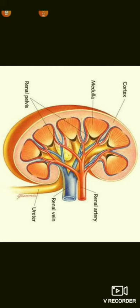The kidneys of humans are reddish-brown, bean-shaped, slightly flattened organs. A pair of kidneys is present just below the stomach, one on either side of the vertebral column. They are asymmetrical in position — the right kidney is about one to one-and-a-half centimeters lower than the left kidney.